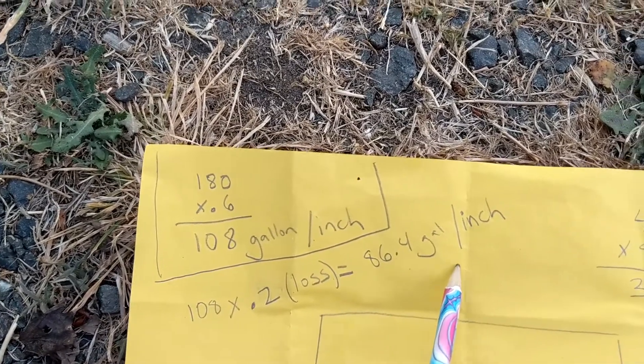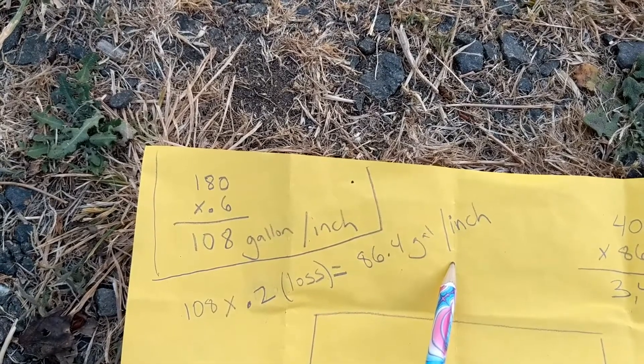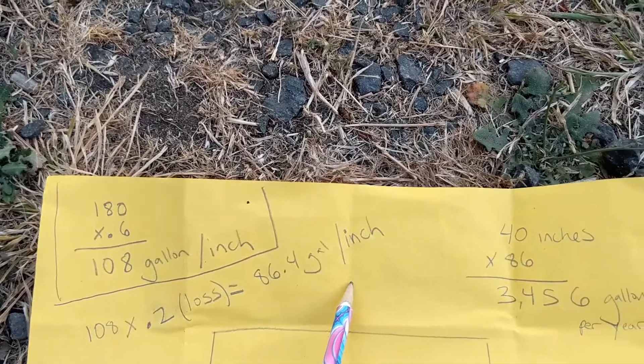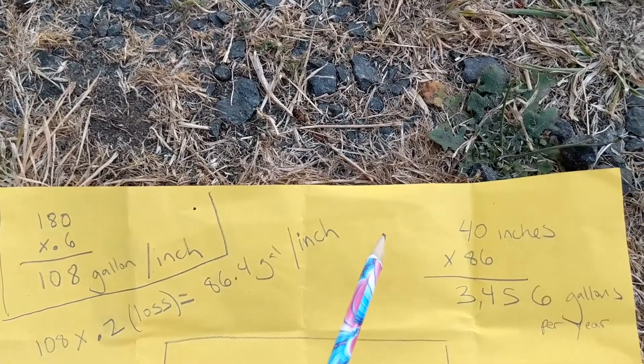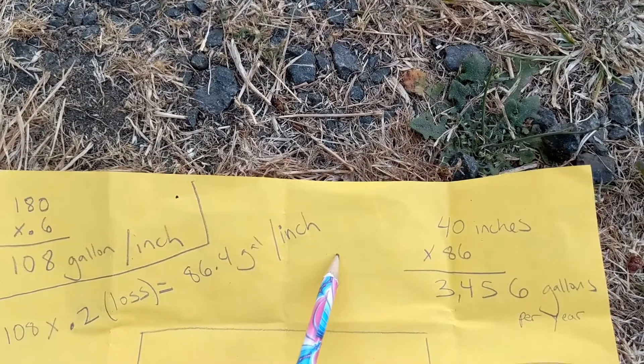And we get 86.4 gallons per inch. Y eso nos da 86.4 galones por pulgada. Y entonces vamos a pensar en un año el promedio de lluvia anual.